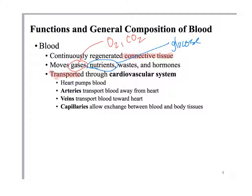Blood travels through blood vessels: arteries, arterioles, capillaries, venules, and veins, and back to and from the heart. What pushes blood through the body? The heart. So that's really the outline of your cardiovascular system, and the blood travels via those vessels.